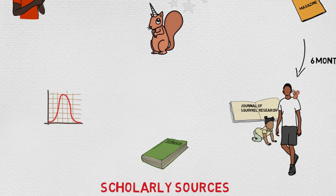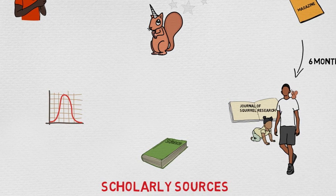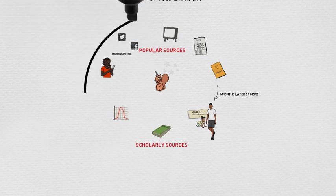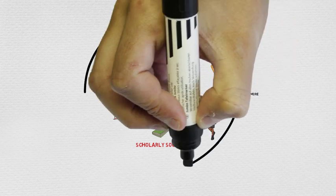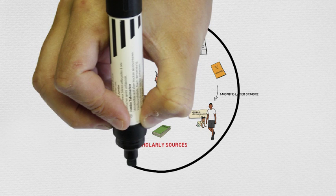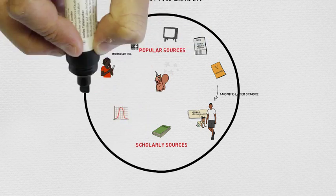So what does this have to do with your college research? Well, the sources that are created following an event fall into what we call the information cycle. Because you will at some point need to use a source that fits a particular need, you'll need to determine whether you should use a popular source, a scholarly source, or both.